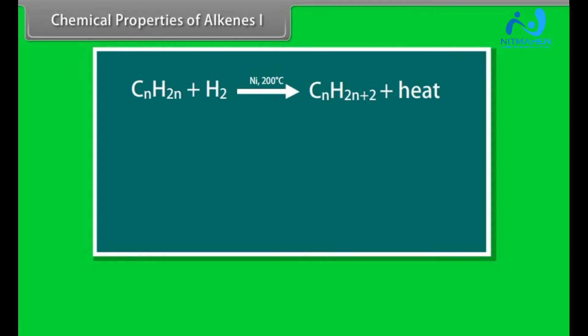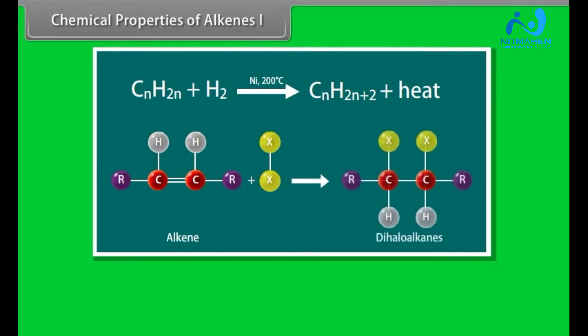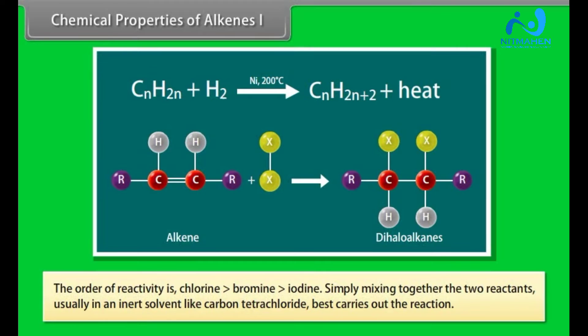Addition of Halogens: Alkenes react with halogens to form dihaloalkanes. The order of reactivity is Chlorine is greater than bromine, is greater than iodine. Simply mixing together the two reactants, usually in an inert solvent like carbon tetrachloride, best carries out the reaction.